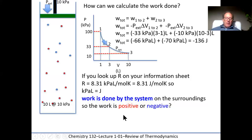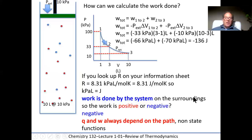Work is done by the system on the surroundings, so it's negative work. If work were done on the system — squishing the gas — that would be positive work. When work is done by the system, the system is losing internal energy — the particles are not moving as fast after the work is done, which is why we regard it as negative work. Q and W always depend on the path since they're non-state functions.